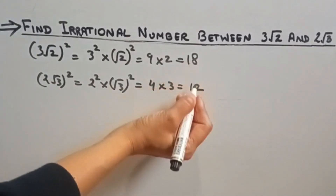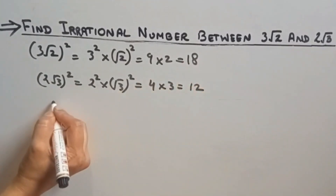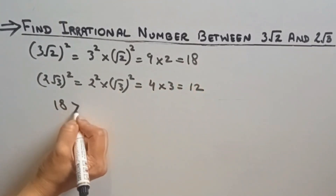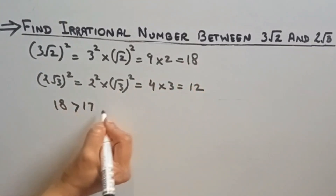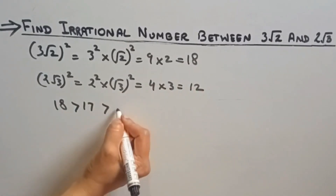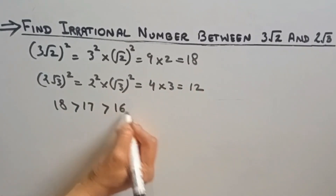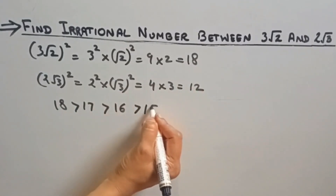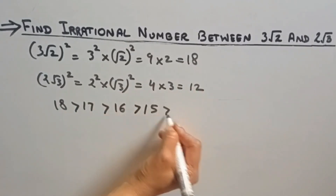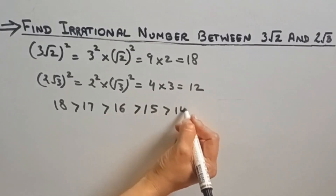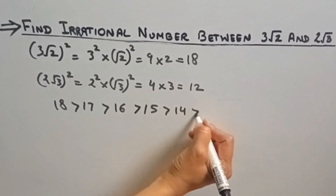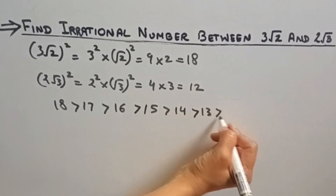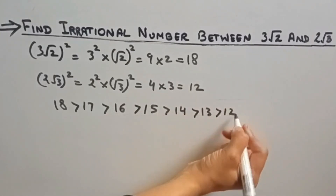Now we have to find numbers between 12 and 18. So: 18 is greater than 17, 17 is greater than 16, 16 is greater than 15, 15 is greater than 14, 14 is greater than 13, and 13 is greater than 12.